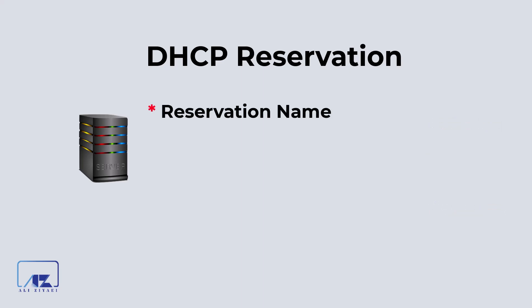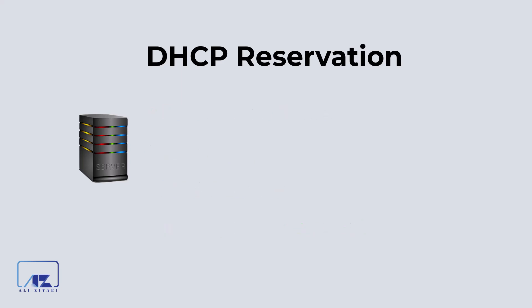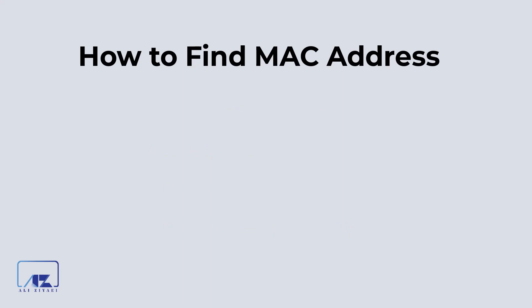To create a reservation you only need: a reservation name — this identifies the reservation and we usually use the computer name; an IP address — the specific IP you would like to assign to the computer; a MAC address — the physical address of the network interface of that client; and a description — which is optional but recommended to help you identify reservations over time.